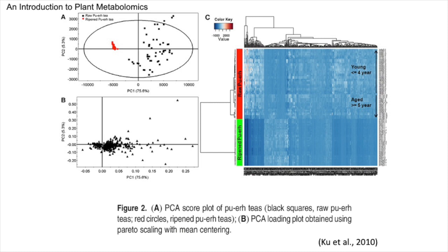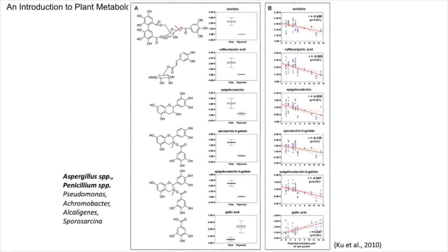There is a clear distinction between raw and ripened Pu'er tea in the heat map, consistent with PCA findings. Interestingly, there are significant differences in levels of several catechins and gallic acid between raw and ripened tea. Various microorganisms such as Aspergillus spp., Penicillium spp., Pseudomonas, Achromobacter, Alcaligenes, and Sporosarcina are involved in the fermentation process. These microorganisms cleave specific bonds in catechins, resulting in the production of gallic acid. Consequently, as fermentation progresses, the concentration of gallic acid gradually increases while the levels of other catechins decrease.